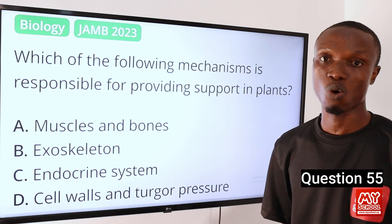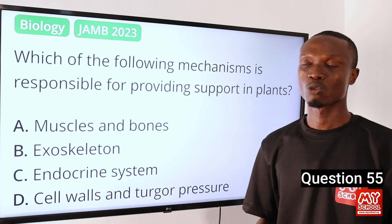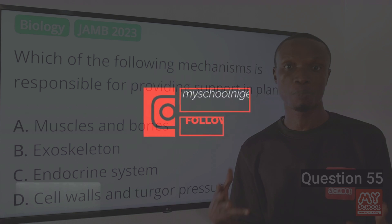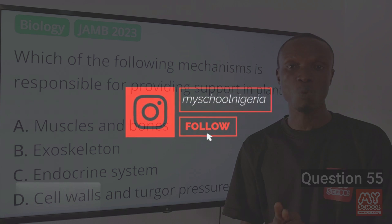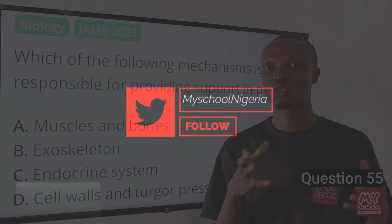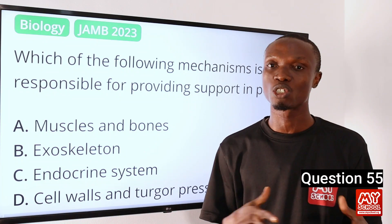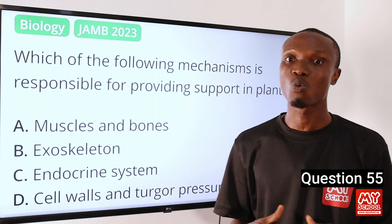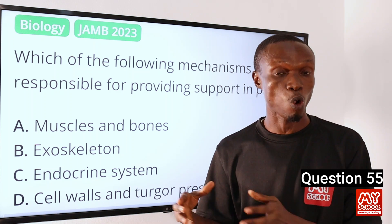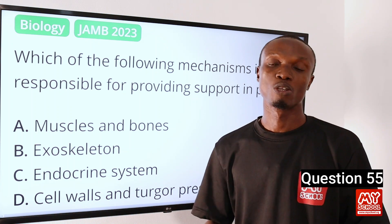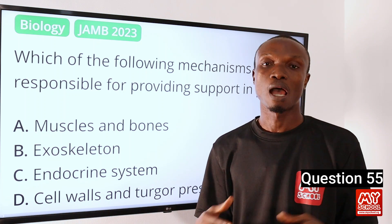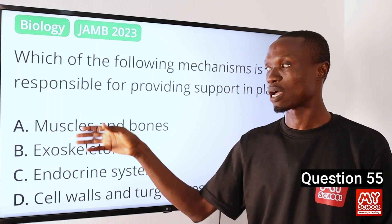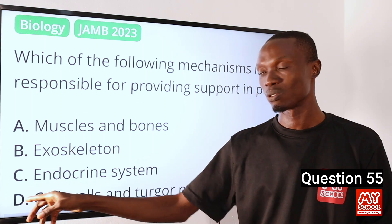The answer to this question is cell walls and turgor pressure. The cell wall gives rigidity and strength to plant cells, thereby helping them to maintain shape and resist external forces. Additionally, turgor pressure — which is the pressure exerted by the cell contents on the cell wall — helps to maintain the overall rigidity and upright form of the plant. So that makes option D the correct answer, while the rest relate to animals, not plants.